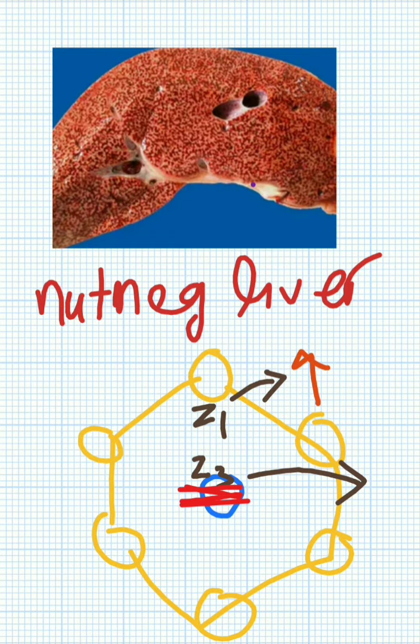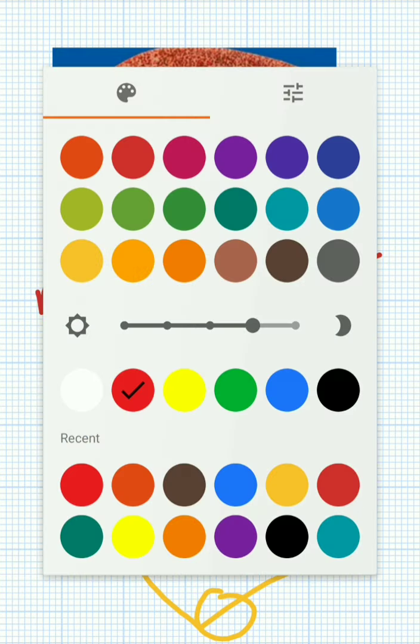Many RBCs will be there plus the cells in that region will undergo necrosis. Necrotic cells plus RBCs all together give the dark red appearance in this pericentral region.